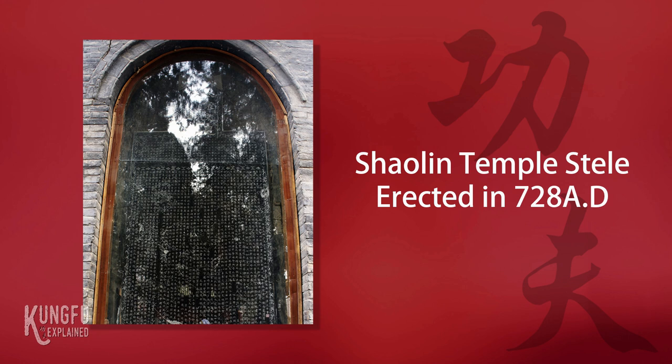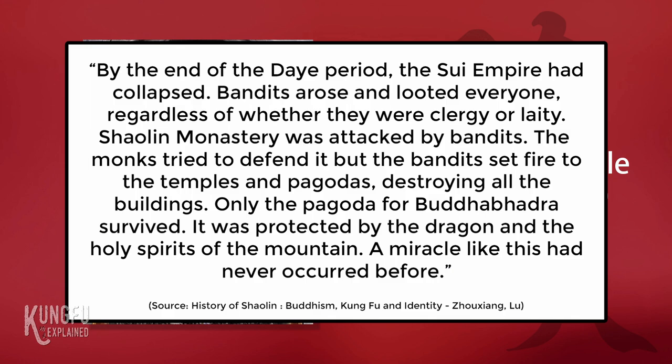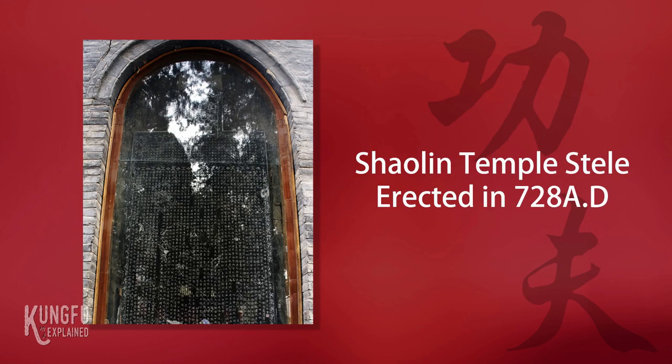This incident is recorded in a stele at the Shaolin Temple erected in 728 AD, which states: 'By the end of the Daye period, the Sui Empire had collapsed. Bandits arose and looted everywhere. Shaolin Monastery was attacked by bandits. The monks tried to defend it, but the bandits set fire to the temples and pagodas, destroying all the buildings. Only the pagoda for Buddha Badra survived.' The inscription highlights that the temple did have a security force comprising monks and others versed in martial methods, which was in place from Buddha Badra's time when the temple was founded.